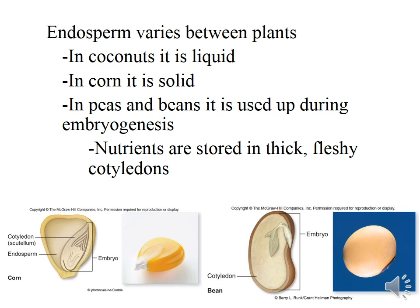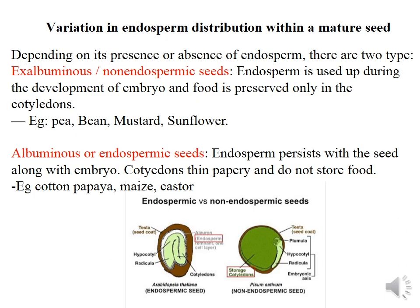Endosperm can be formed as a liquid or solid, and the nutrient content inside the endosperm could be very thick, fleshy, cotyledonous, or very waxy and oily. Depending on the endosperm distribution within a mature seed, we can further categorize the seed into two types. The first is exalbuminous or non-endospermic seed, where endosperm is used up during the development of the embryo, with food preserved in the embryo itself. Examples include pea, mustard, or sunflower. The second type is albuminous or endospermic seed, where the endosperm persists with the seed along with the embryo, with thin cotyledons that do not store food. Examples include cotton, papaya, mace, and castor.